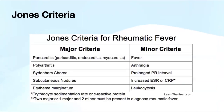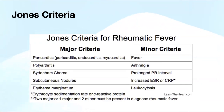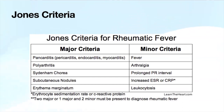These are all the major and minor criteria. Minor criteria include fever, arthralgia rather than arthritis, a prolonged PR interval on ECG, increased ESR or CRP, and leukocytosis. To make the diagnosis, you need two major criteria or one major and one minor criteria.